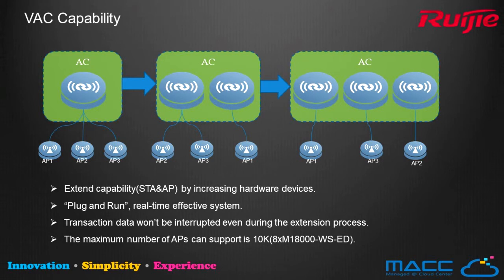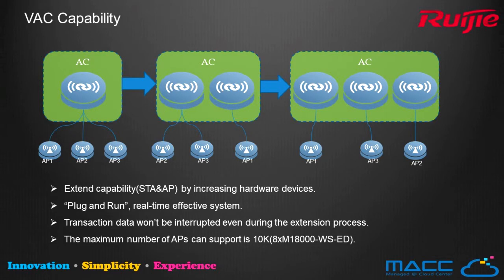VAC technology enhances the hardware controller capability in the following ways. The number of APs that the virtual controller can support is extended by increasing hardware devices as virtual members. In a network extension or migration scenario, a new controller can simply plug in and run, taking effect in real-time without any downtime or interruption to the Wi-Fi service. Currently, a VAC consisting of 8 M18K WSED units can support up to 10,000 APs, while a standalone controller supports at most 2,000 APs.